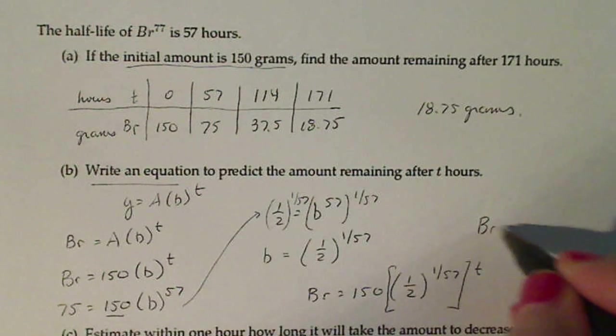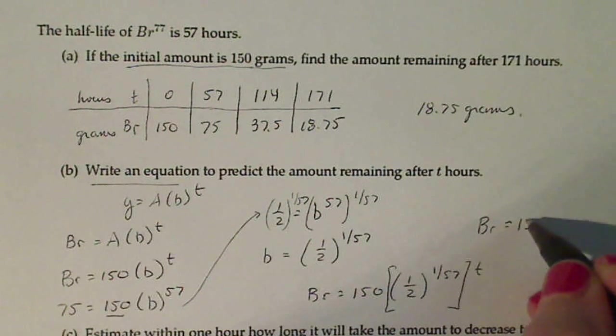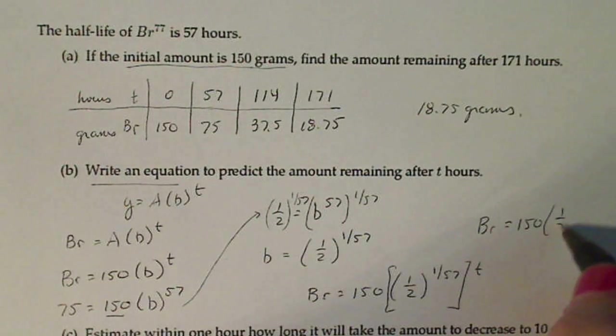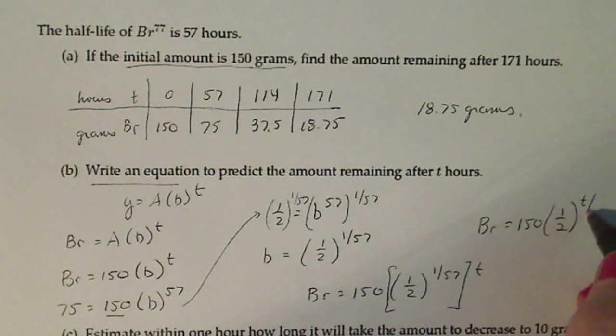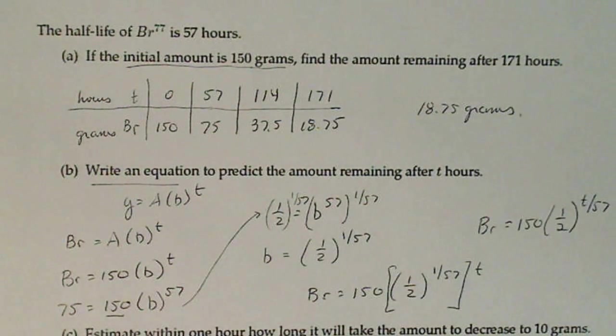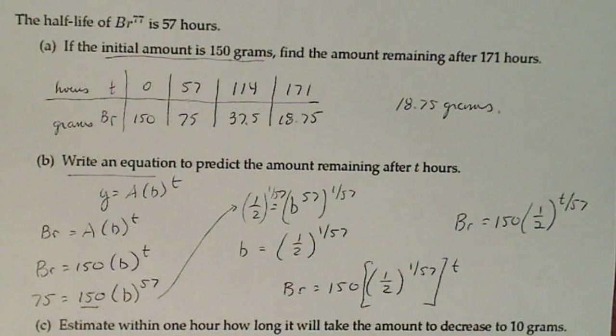So my final formula will be Br is equal to 150 times one-half raised to the t over 57. Just a little different. I don't care if you approximate B, one-half raised to the one over 57.